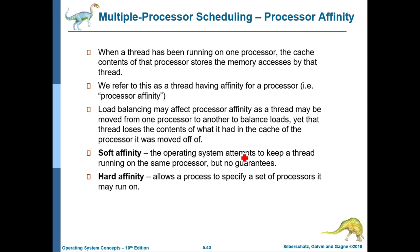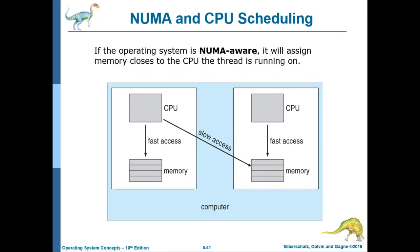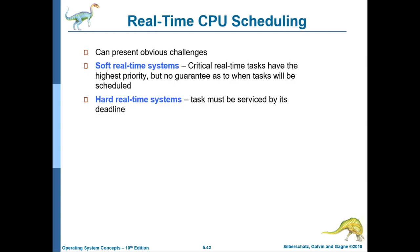Processor affinity refers to a thread having affinity for a processor — when a thread runs on one processor, its cache contents store that thread's memory accesses. Load balancing may affect processor affinity by moving a thread to another processor, causing it to lose its cached data. Soft affinity means the OS attempts to keep a thread on the same processor but gives no guarantee. Hard affinity allows a process to specify a set of processors it may run on. NUMA-aware operating systems assign memory closest to the CPU the thread is running on.